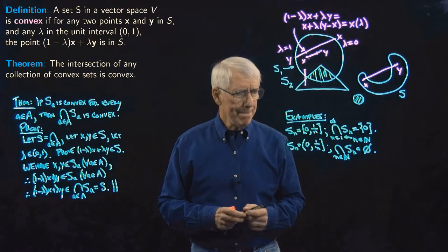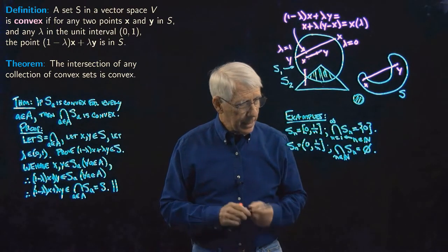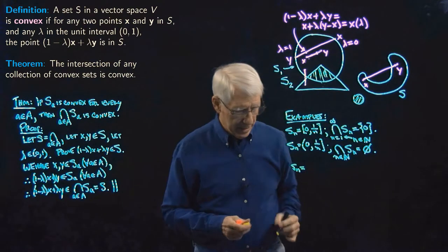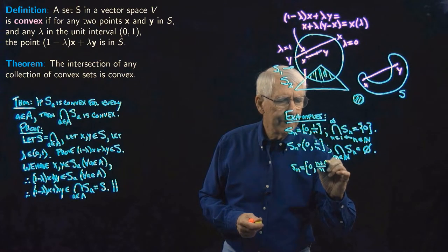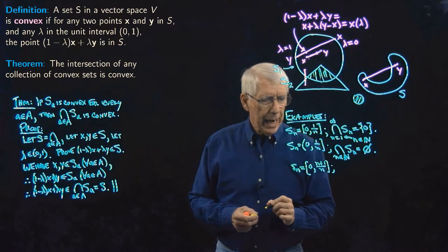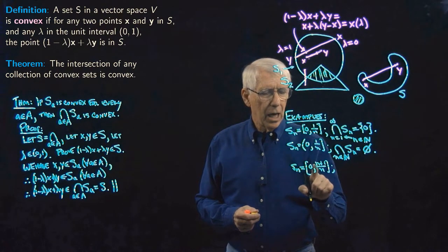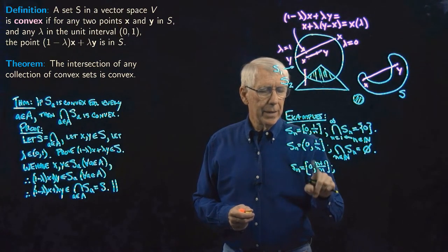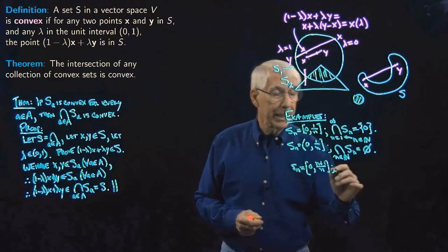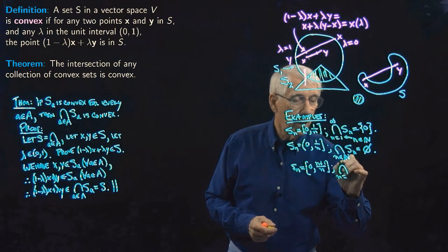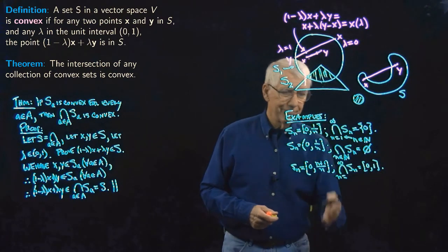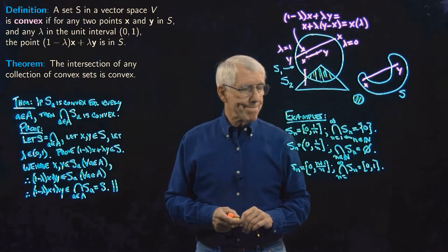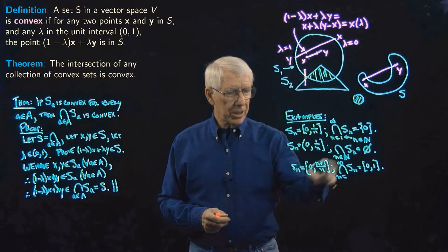One more example on the real line: let S_n = [0, (n+1)/n]. When n = 1 the right endpoint is 2, and as n grows larger the right endpoints move back toward 1 but never reach 1. The intersection of all these sets is [0, 1], which is a convex set. Those are several examples on the real line. Now let's look at an example in R2.